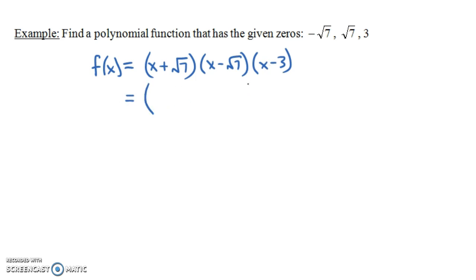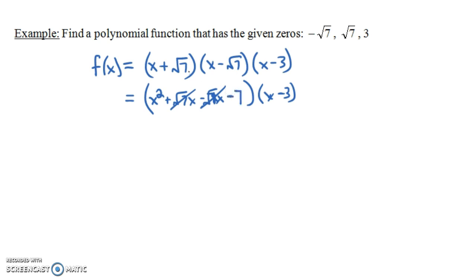It's easiest to multiply the first two factors together first. x times x is x². The inside terms give +√7 · x, and the outside terms give -√7 · x, so those cancel to 0. Finally, +√7 times -√7 = -7, since √7 × √7 = 7. So we get x² - 7, and then times (x - 3).